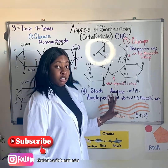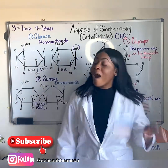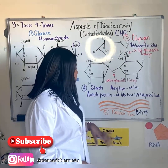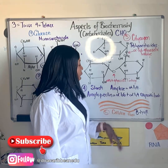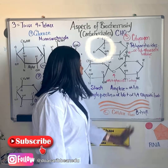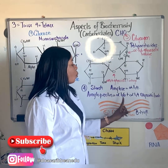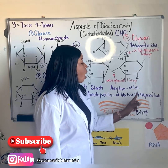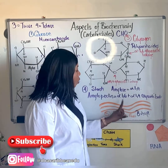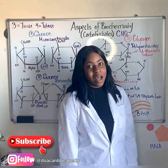Next we have starch, which is also a polymer of alpha glucose. There are two main forms: amylose, predominantly found in plants with alpha 1,4 glycosidic linkages, and amylopectin, similar to glycogen with alpha 1,6 and alpha 1,4 glycosidic linkages. This also confers an advantage to storing starch in plants.